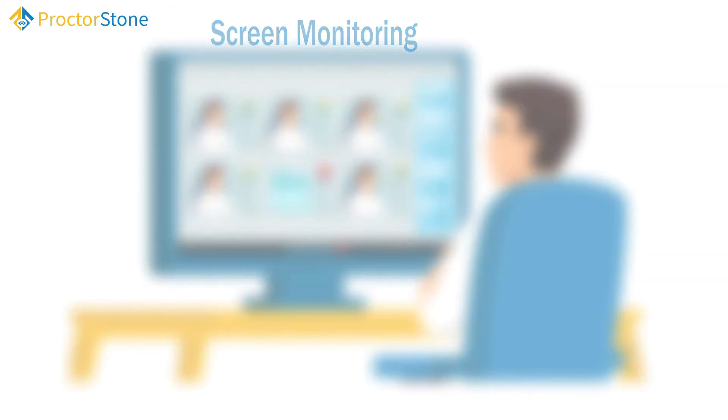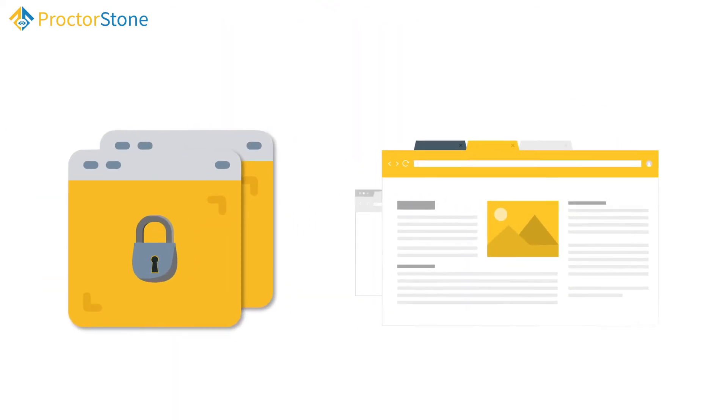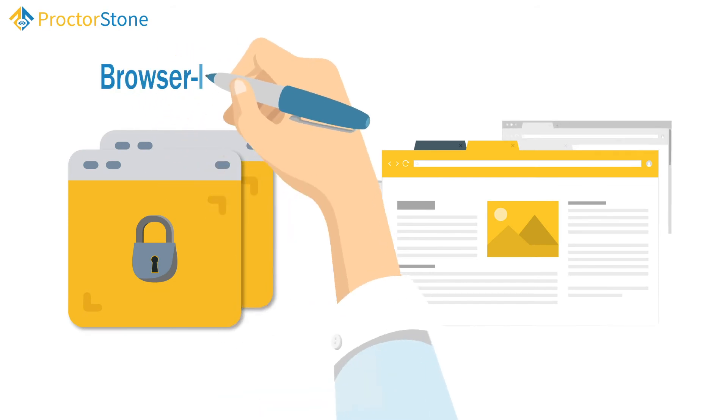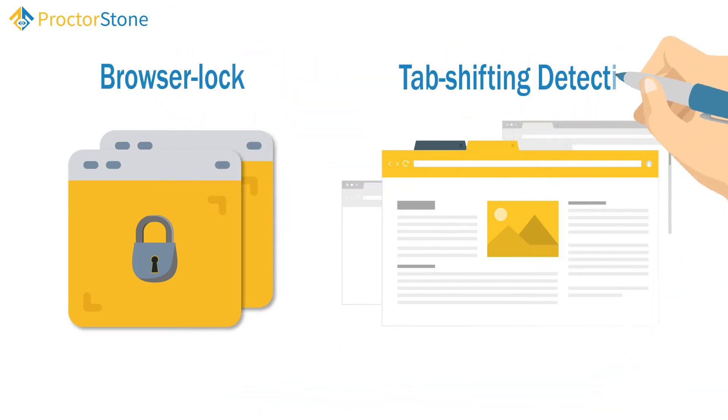Browser lock features — for example, tab-shifting detection — are additional precautions to prevent distractions like accessing other websites.